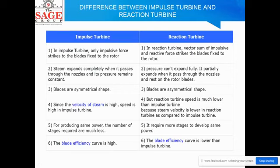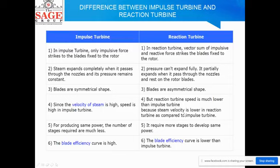Differences between impulse and reaction turbines: In an impulse turbine, only impulse force strikes the blade. In a reaction turbine, both impulse and reaction force strike the blade through the rotor, hence it is more powerful. Steam expands completely when it passes through the nozzle in an impulse turbine, whereas in a reaction turbine, pressure cannot expand fully through the nozzle alone — it also expands through the blades. Blades are symmetrical in an impulse turbine. The steam velocity is high in an impulse turbine so speed is high, but the reaction turbine runs at much lower speed. For producing the same power, fewer stages are required in an impulse turbine, while a reaction turbine requires more stages.